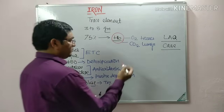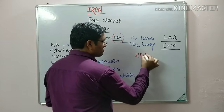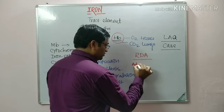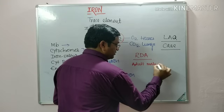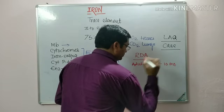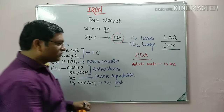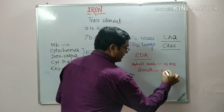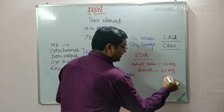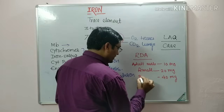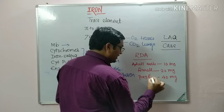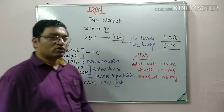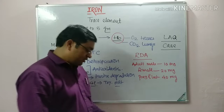Coming to the RDA — recommended daily allowance of iron: for adult males it is 10 milligrams per day; for menstruating females it is 20 milligrams per day; and it is 40 milligrams per day in case of pregnancy and lactation. Demand also increases in growing children — it is near about 10 to 20 milligrams per day.